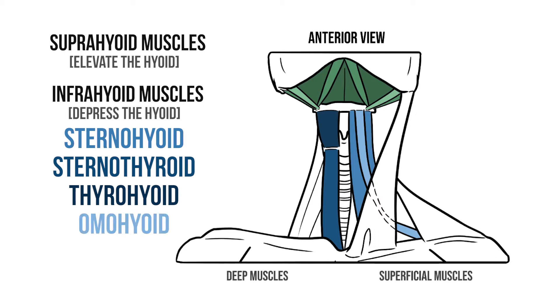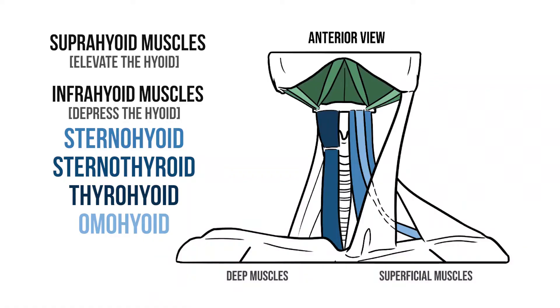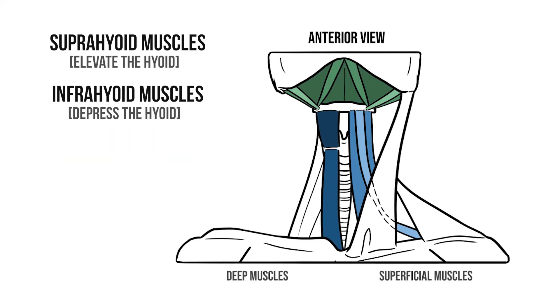That isn't the only odd thing about omohyoid — instead of passing directly between its two attachments, it forms two muscle bellies that run at different angles. This unusual shape helps to remember the name. Generally speaking, it's more important to know the names and actions of the two muscle groups rather than the details of individual muscles.